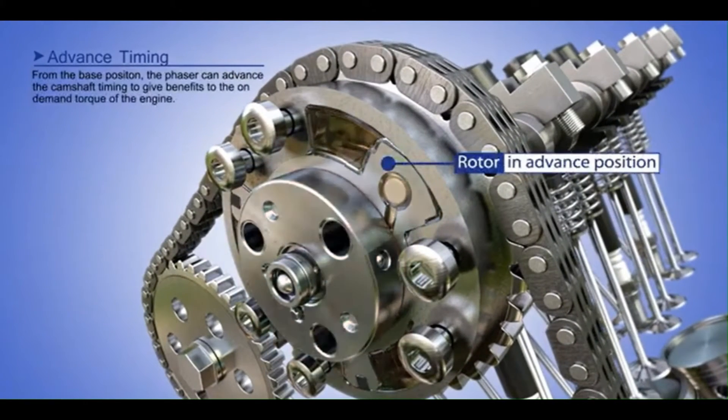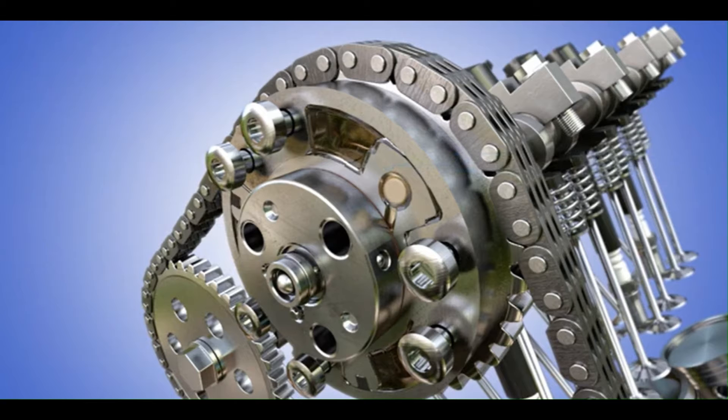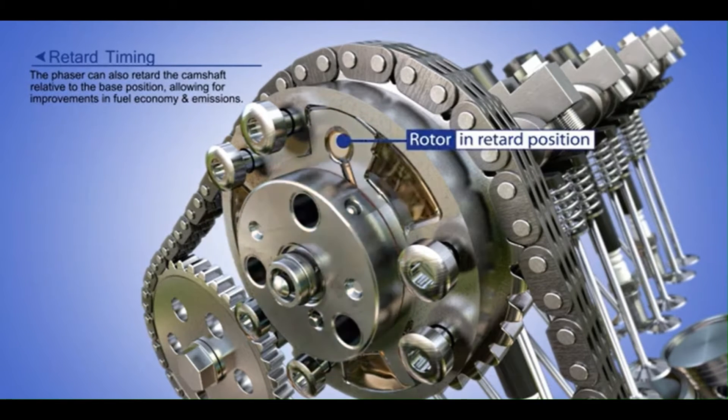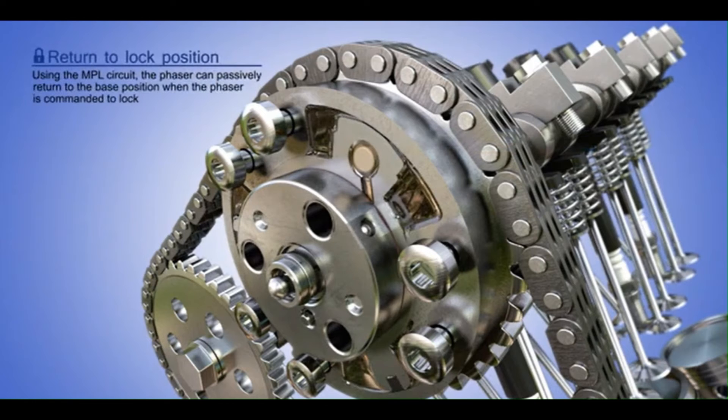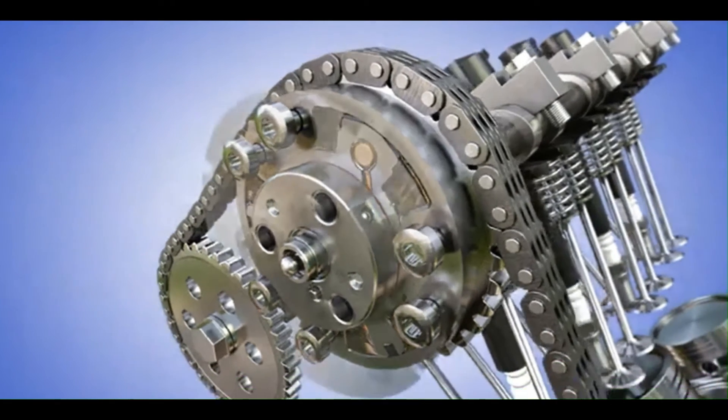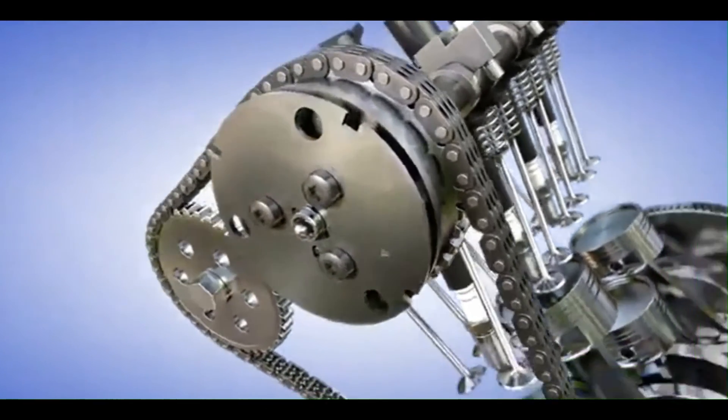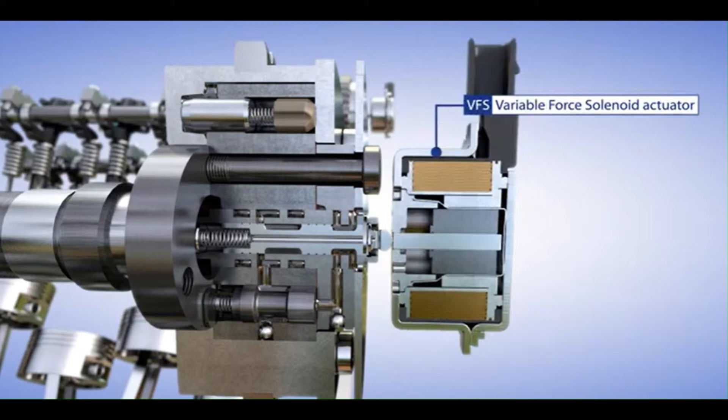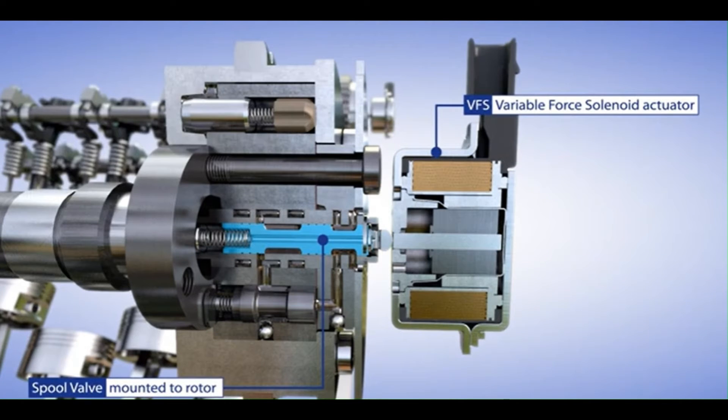2. Pumping Losses. Pumping losses occur when the engine expends energy to move air and exhaust gases in and out of the combustion chamber. As the intake valve opens, the piston moves down to draw air in, and as the exhaust valve opens, the piston pushes exhaust gases out. Any restriction in the flow of air or exhaust increases these pumping losses. These losses can account for up to 10-15% of the engine's total energy consumption, especially at part load or low-speed operation. This is why intake valve design, port shapes, and the timing of valve events are carefully engineered to reduce resistance.